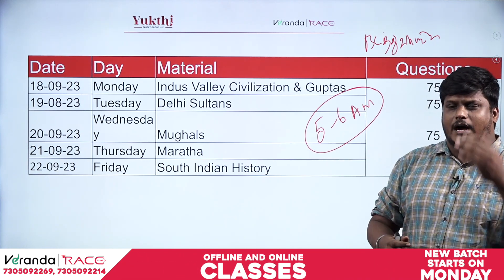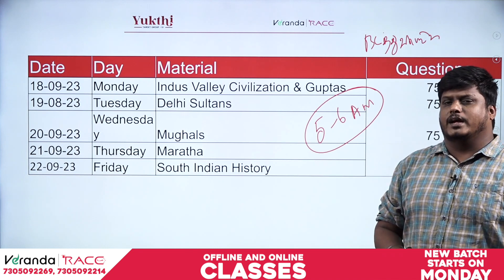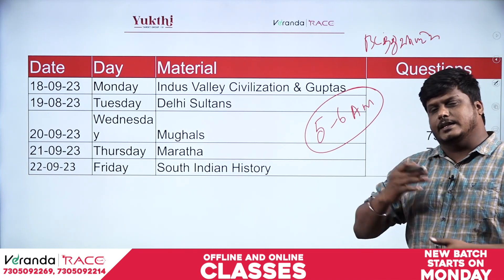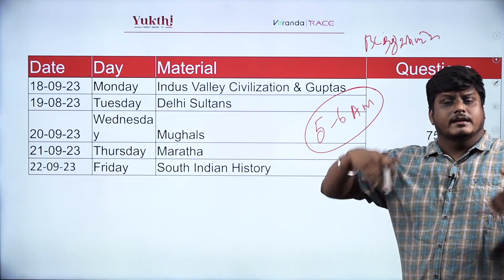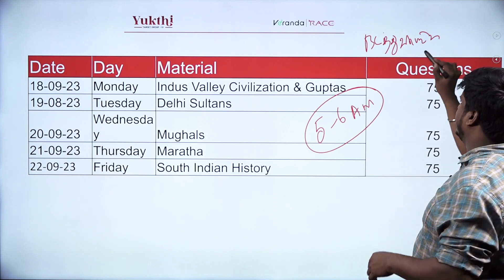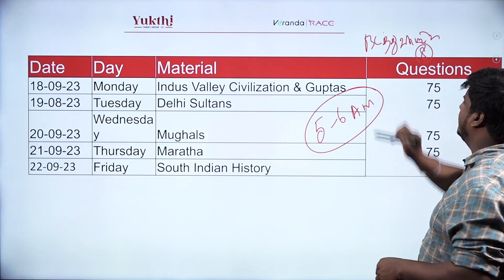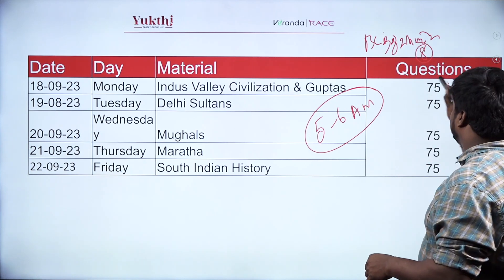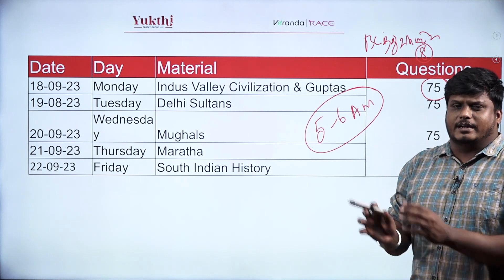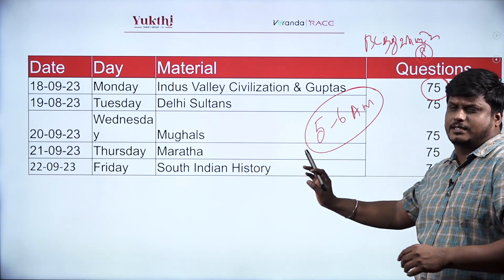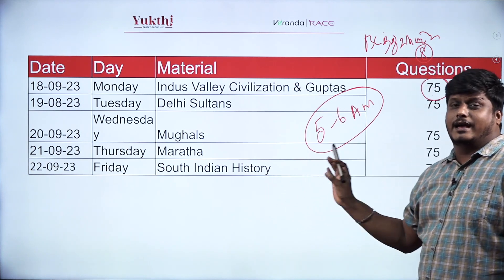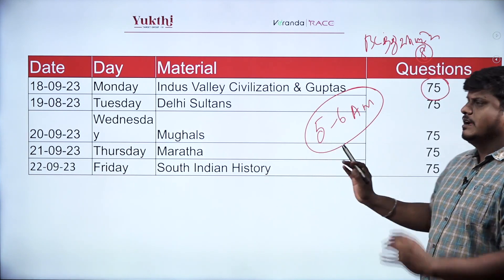Daily is the same thing. In this Valley Civilization, let's look at the overview of Guptas. Then you will learn that, then you will revise the night, then you will test the night, then you will upload a test. Then on Tuesday: Delhi Sultan, Mughals, Marathas, South Indian History. Day twice you will do online students.